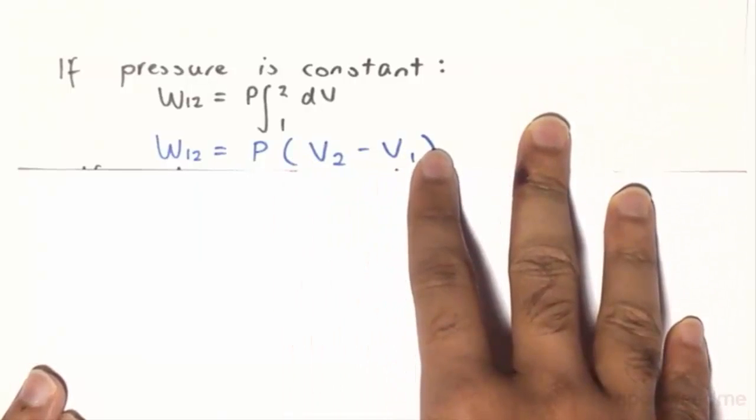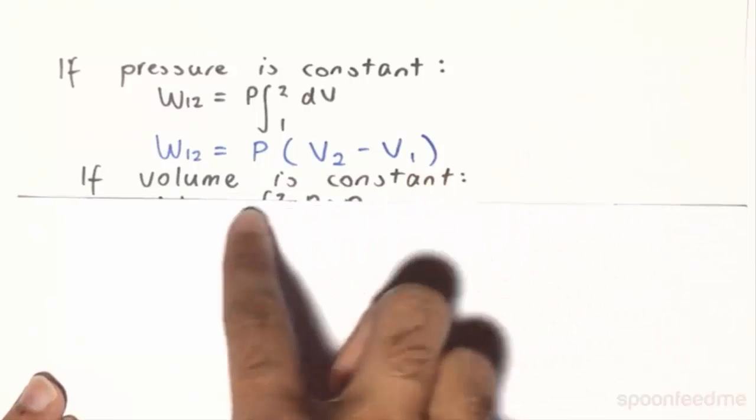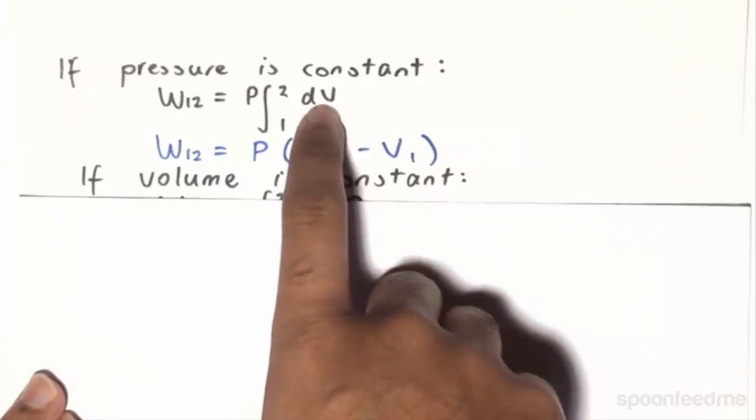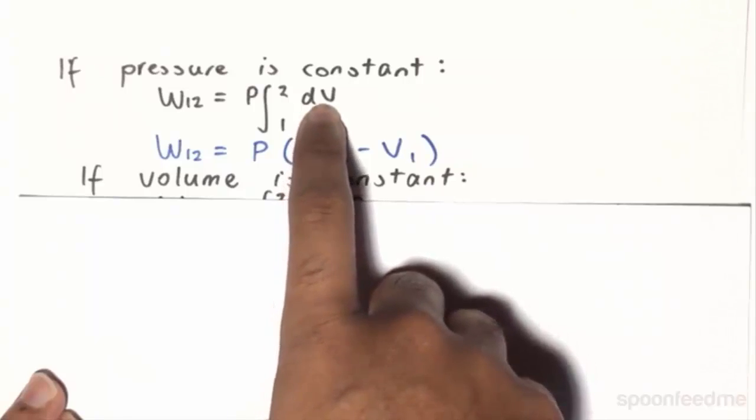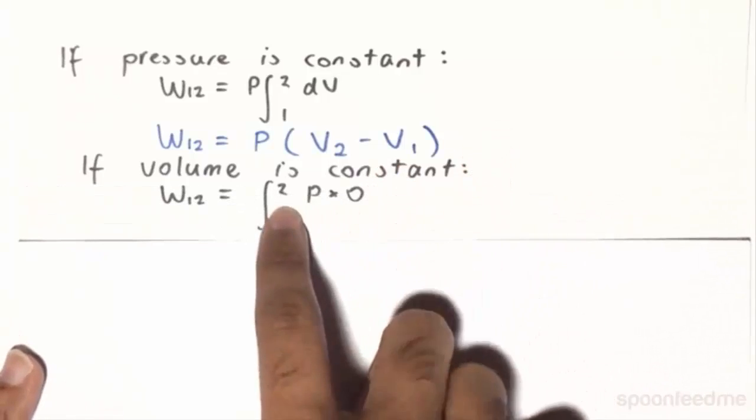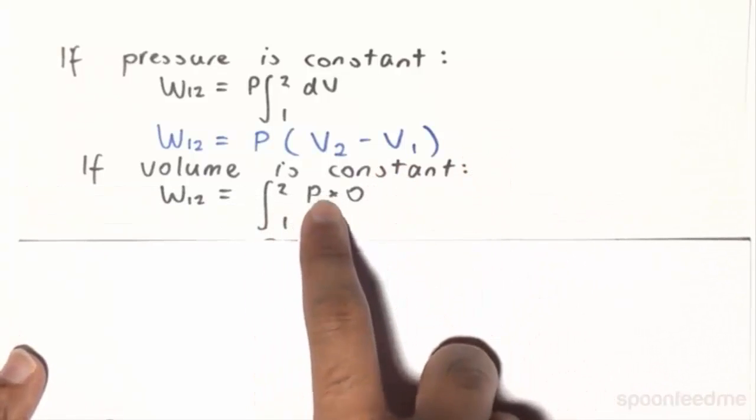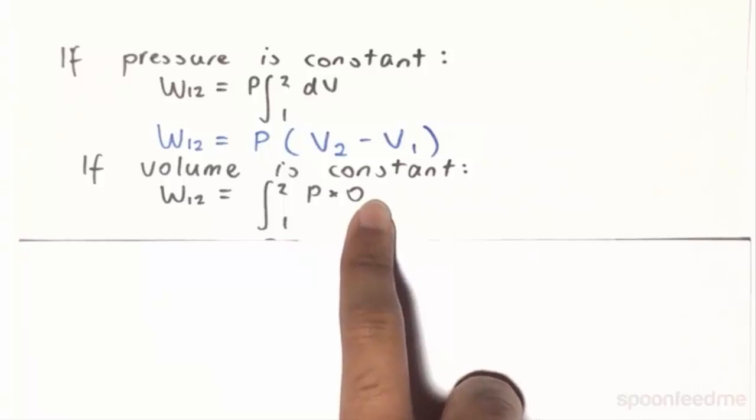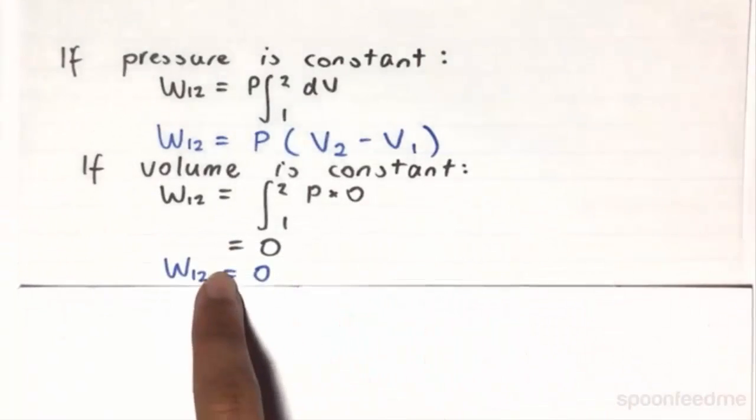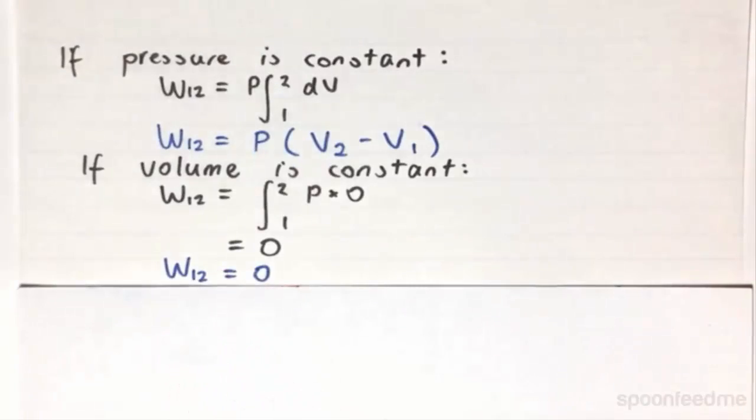The second situation that is of interest to us is if the volume is kept constant. If the volume is kept constant, then the dV, the change in volume, is going to be zero by definition. And so therefore, this will be the integral between 2 to 1 of P times 0, and the integral of 0 is just 0. So this basically says that if the volume is kept constant in the system, then there is no chance of work being done by the system thermodynamically.